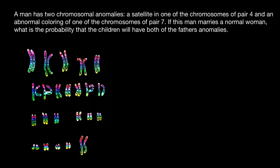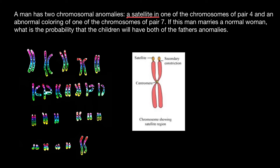We can also see such abnormalities as a satellite. Actually, it's not abnormal for certain chromosomes — for example, chromosomes number 15, 16, 17, 21, and 22. But if we see a satellite on any other chromosome, we know instantly that this is something abnormal.